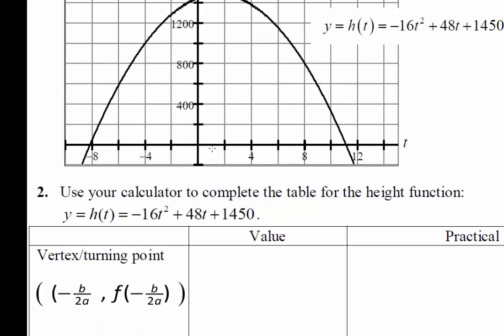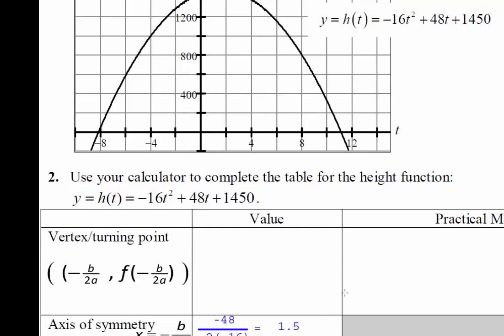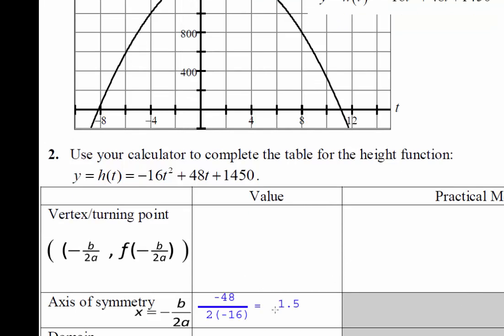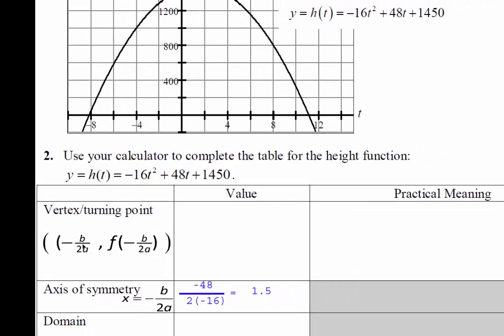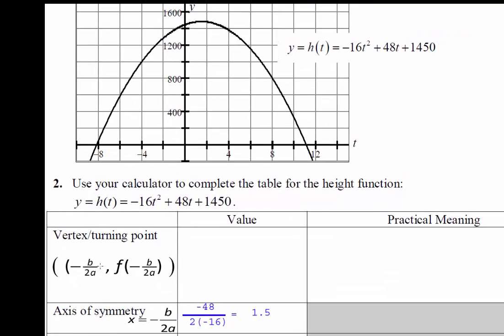So think of this as negative 48 over negative 32, which gives you 1.5. So if I were to draw an imaginary dotted line at 1.5, that would split my parabola in half. So there's no practical meaning for this. But when we think about the vertex, remember that the point that gives me the maximum value of this parabola is called the vertex.